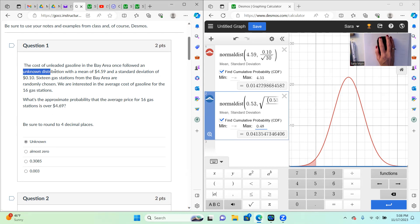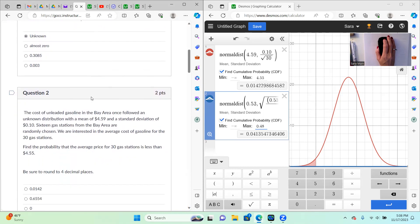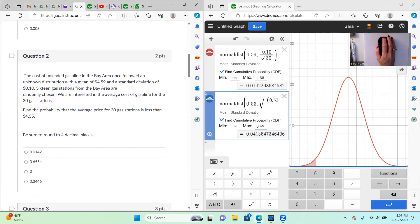I said up here, it's unknown distribution, and our sample size is too small. Okay, question two, same scenario, but now I'm asking you to look at this for 30 gas stations. So we now have enough to use the central limit theorem.